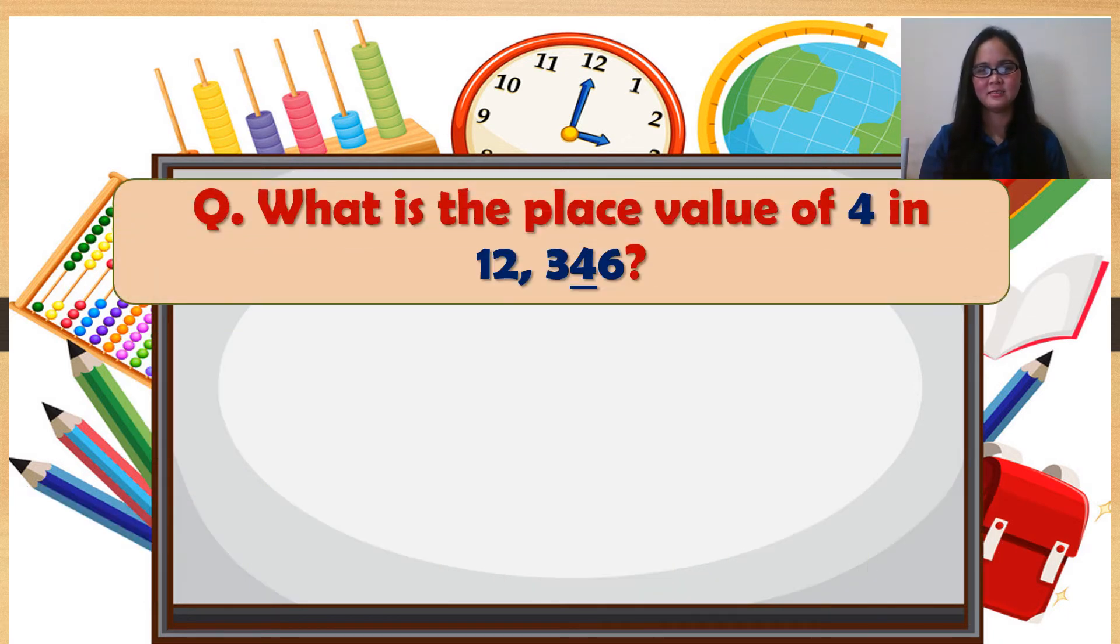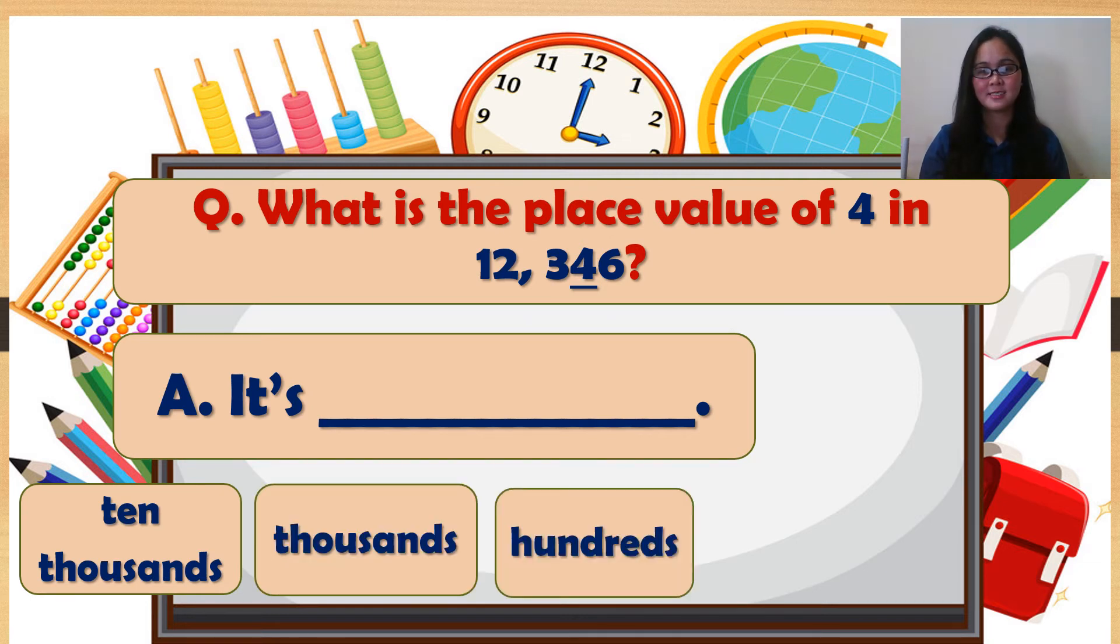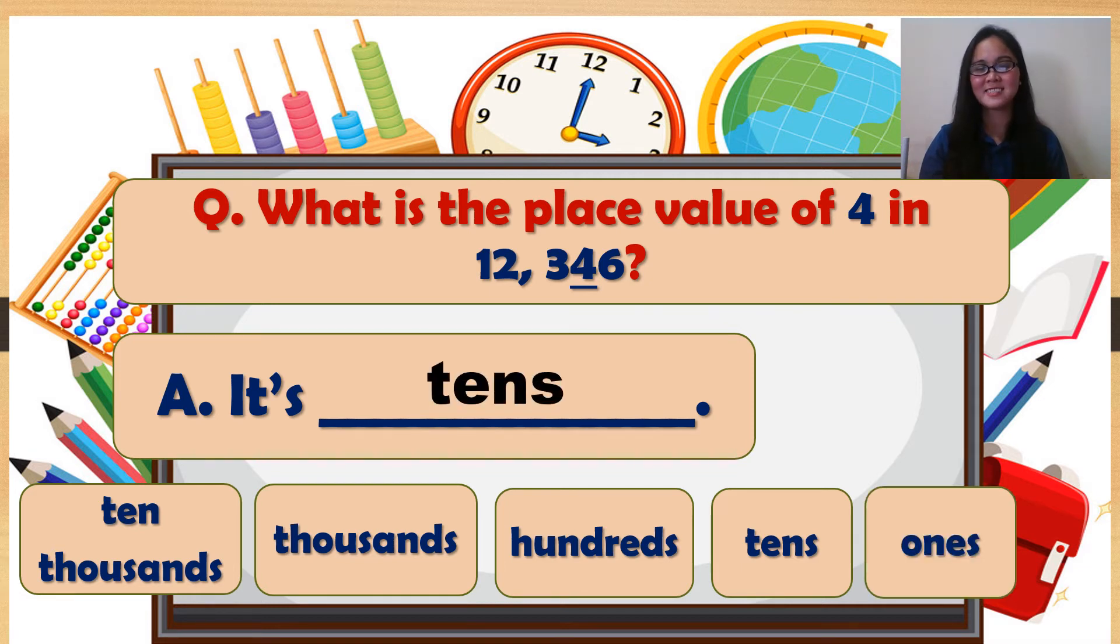What is the place value of 4 in 12,346? It's blank. Ten thousands, thousands, hundreds, tens, ones? It's tens.